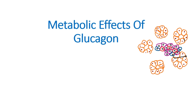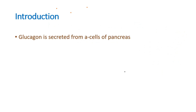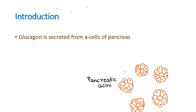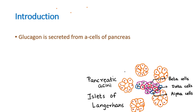In this video we are going to discuss about the metabolic effects of glucagon. Glucagon is a hormone which is secreted from the alpha cells of the pancreas. The pancreas contains an exocrine part, which are the pancreatic acini, and also the endocrine part, which has the islets of Langerhans containing alpha, beta, and delta cells. Glucagon is produced from the alpha cells of these islets of Langerhans.